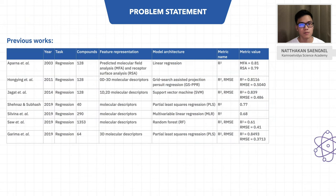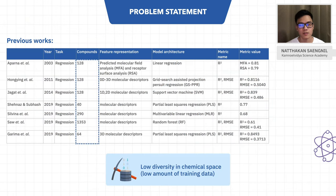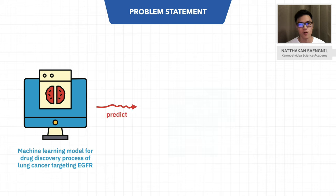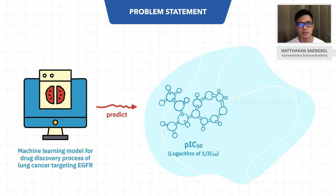Nowadays, machine learning has overcome these problems. From the literature review, we found that there are already models that target EGFR, but their performances are not well enough. In addition, these models were trained with a low amount of data. Therefore, we developed machine learning models for predicting PIC50 with a large-scale dataset.